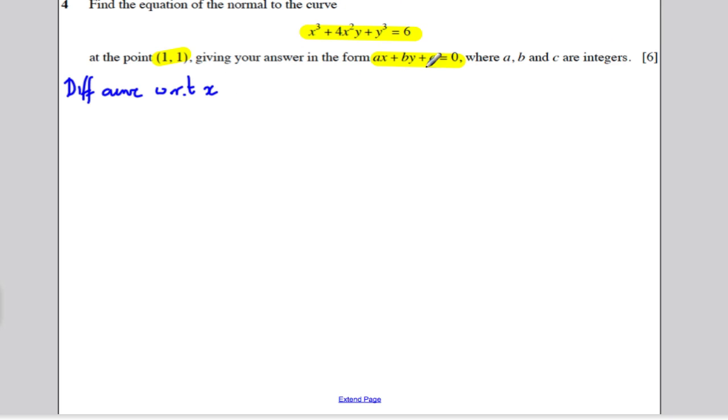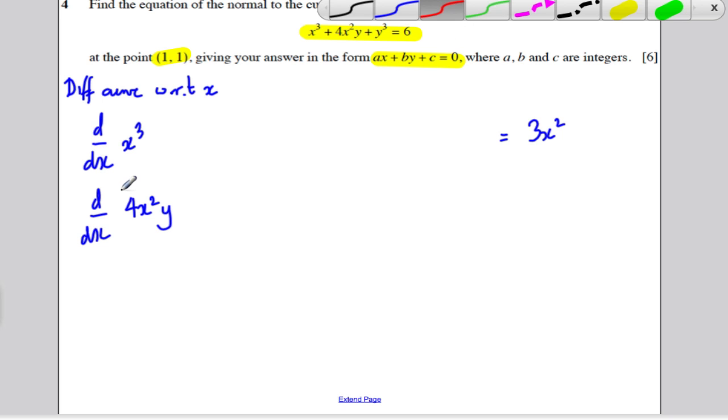So everything I see, I'm going to differentiate with respect to x. So I'm going to do d/dx of x cubed. And I know what that is. That's 3x squared. Then I'm going to differentiate probably the hardest term, 4x squared y. Now, at this point, I'm going to think of 4x squared as y as a product rule. So I'm going to think of 4x squared as u and the y as v. And I'm going to use uv dash plus v u dash to differentiate.